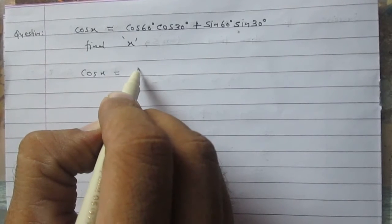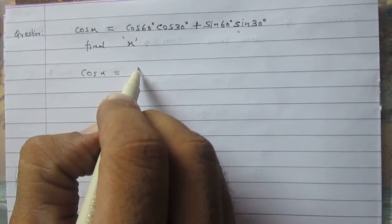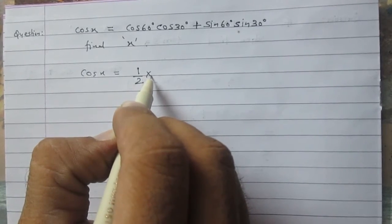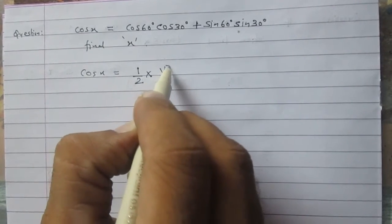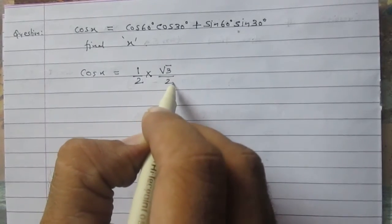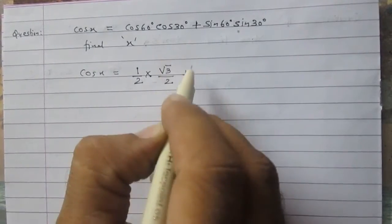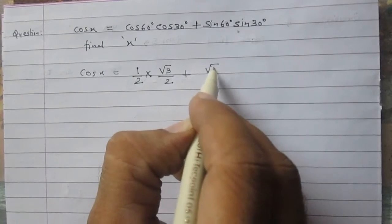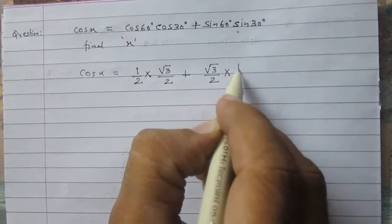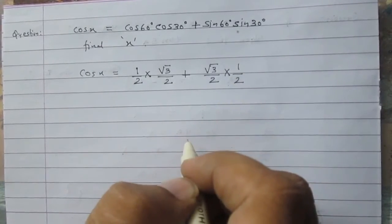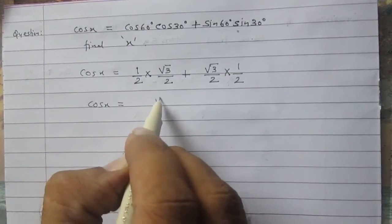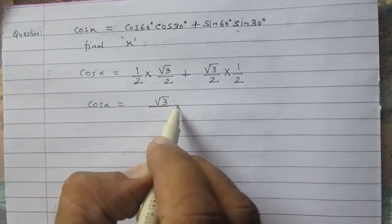The given expression is cos x = cos 60° × cos 30° + sin 60° × sin 30°. Substituting known values: cos 60° = 1/2, cos 30° = √3/2, sin 60° = √3/2, and sin 30° = 1/2.